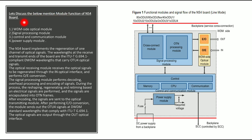The NS4 board implements the regeneration of one channel of optical signals. It generates one optical signal of DWDM at an ITU-T defined wavelength. The wavelength at the receive and transmit ports carries OTU4 optical signals compliant with ITU-T DWDM standards. The optical receiving module receives the optical signals through the in-optical interface and performs optical to electrical conversion.